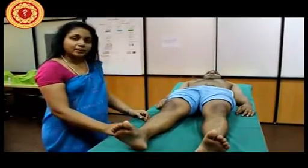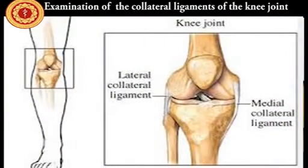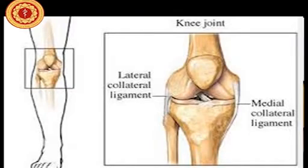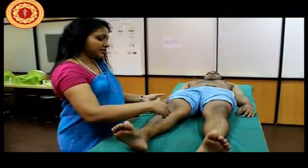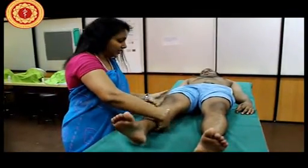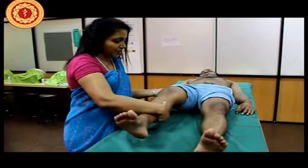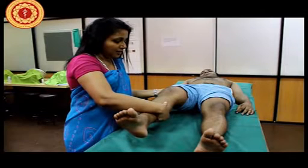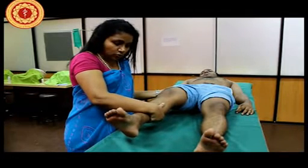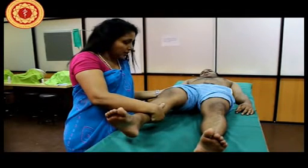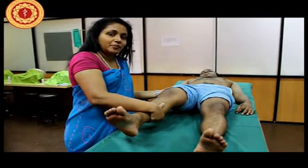Now we will examine the collateral ligaments of the knee joint. The knee has two collateral ligaments, the medial and the lateral. When examining the collateral ligaments, I will place my hands with one hand on his leg and one hand over the thigh. I will slightly flex his knee joint and then apply a valgus force — a force towards me. If this is causing pain, there is a problem with the medial collateral ligament.